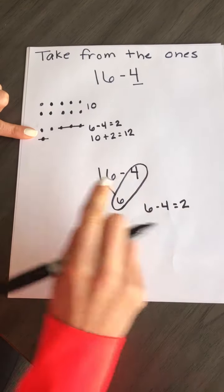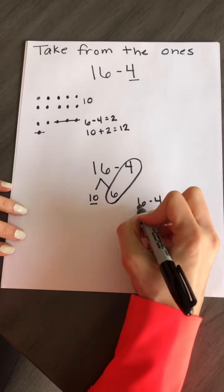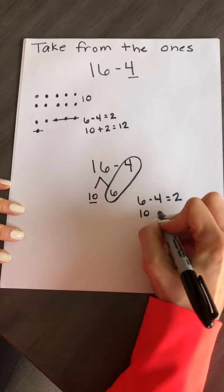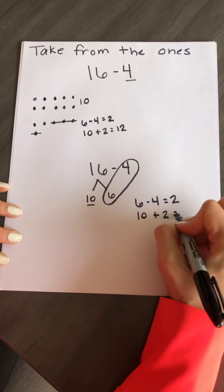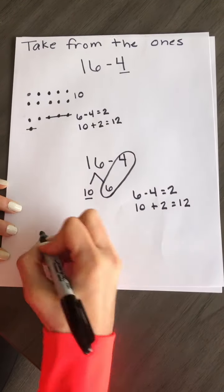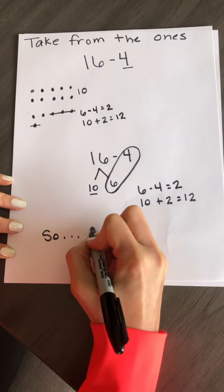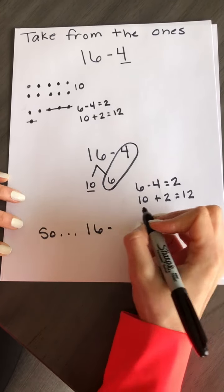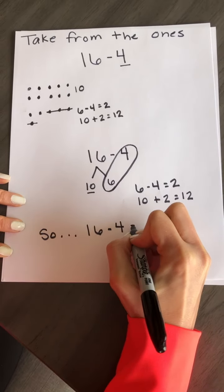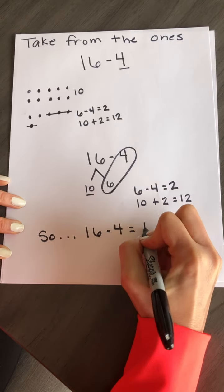But you have to add back your 10. So you're going to add 10 plus 2 to equal 12. So 16 minus 4 equals 12.